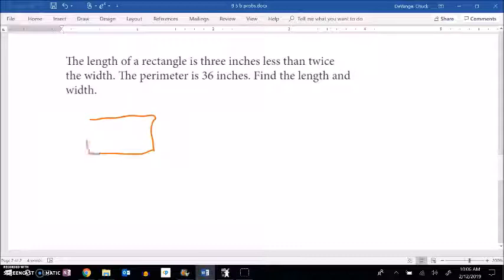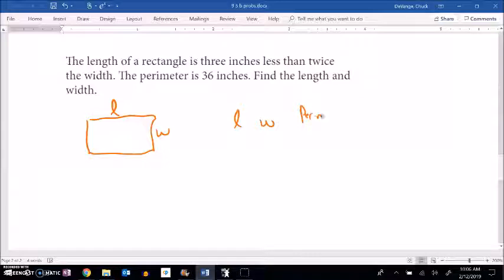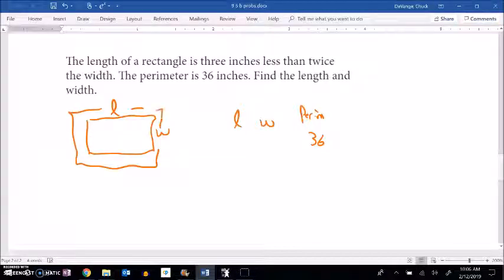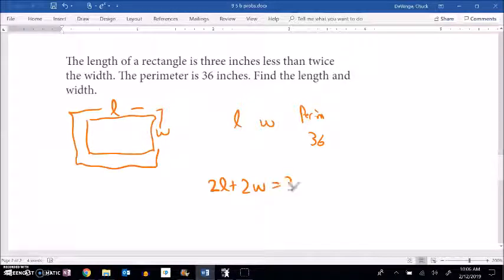Alright, so we have some rectangle. I'm going to say I have some width and some length. So I have some length and some width. And I know the perimeter is 36 inches. So the perimeter is all the way around. So that tells me that if I go two lengths plus two widths, it's 36.